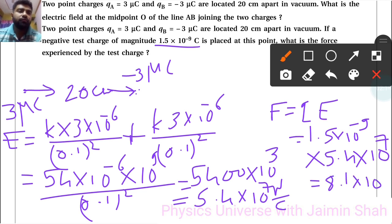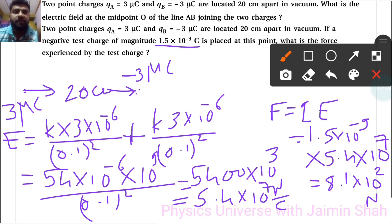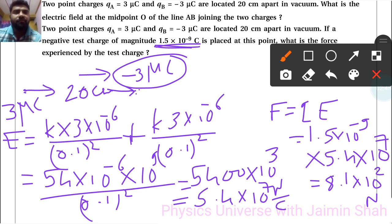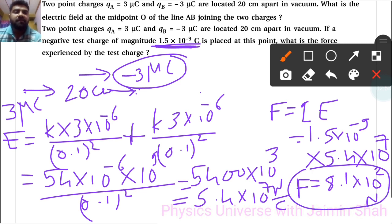The force is 8.1 × 10⁻² newton. Since the test charge is positive, it experiences a repulsive force from the +3 microcoulomb charge and an attractive force toward the minus 3 microcoulomb charge. Therefore the net force is directed toward the minus 3 microcoulomb charge, and the electric field at the midpoint also points in that same direction.